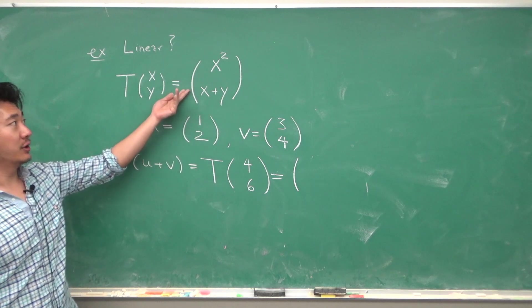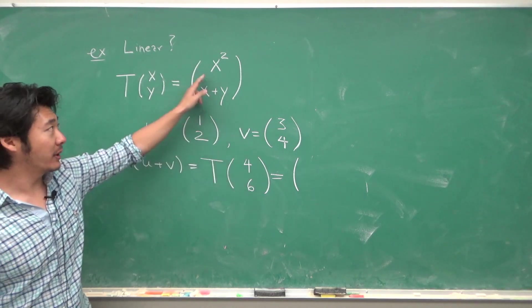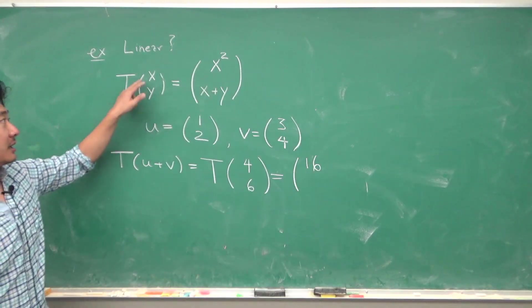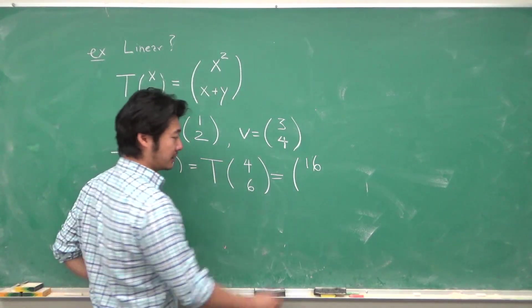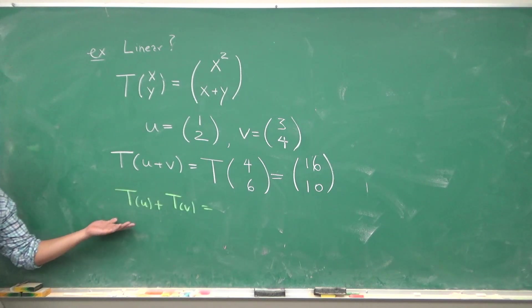T of u plus v would be T of (4,6) because we add the components of the vectors. And this vector, according to this rule, gets transformed to this component squared, so 16, and x plus y, so 4 plus 6. And we need to check if this is equal to T(u) plus T(v).